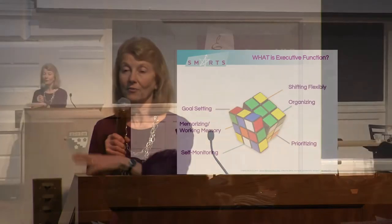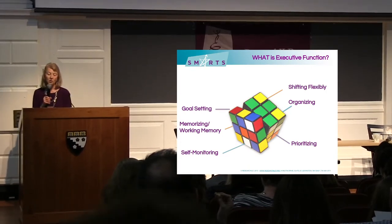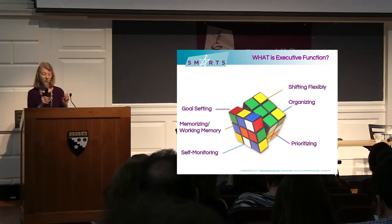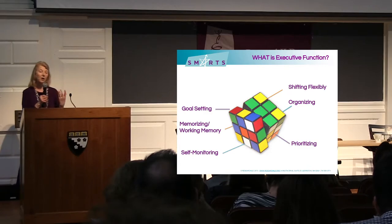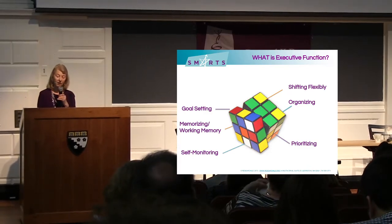People often want to see these as separate processes, whereas in fact, if you impact one, if you affect one, if you're teaching to one, you're actually often affecting and teaching to all of these processes. Goal-setting, cognitive flexibility and shifting, working memory, organizing and prioritizing, and self-regulation and self-monitoring are the key processes we see as important.